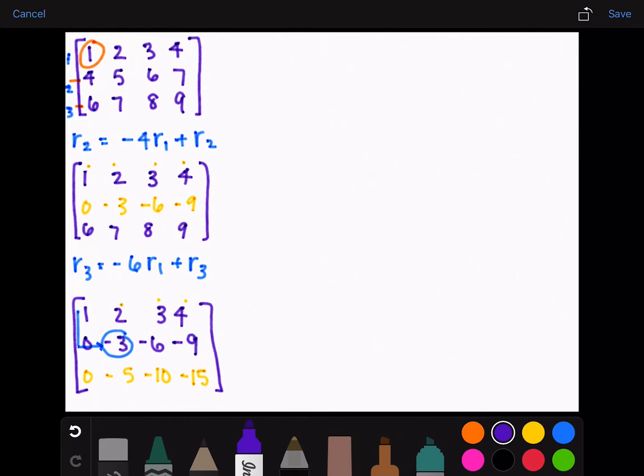Now moving up to here, we need to make that negative three a one. So we will replace row two with negative one-third times row two. And that will end up with one, two, three, four.